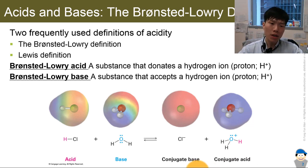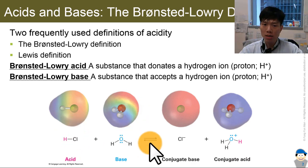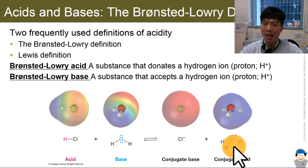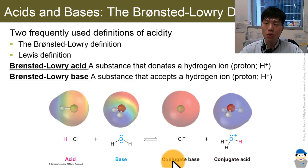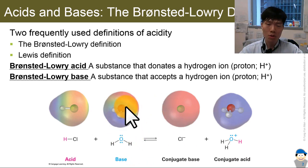If you take a look at this picture here, the acid, which is HCl, will lose its H+ to the water, which acts as a base. Water accepts H+ and you get chloride and H3O+ ion. In this definition, we have something called the conjugate theory. The acid will become the conjugate base, while the base will become the conjugate acid.